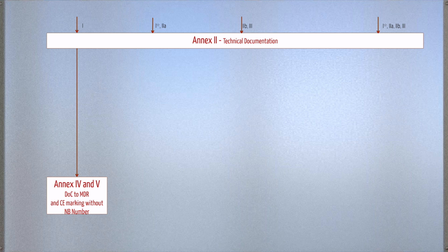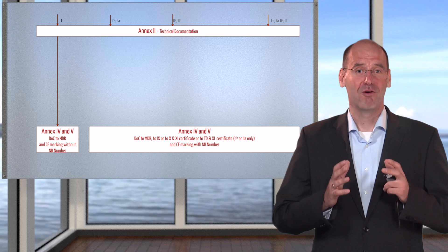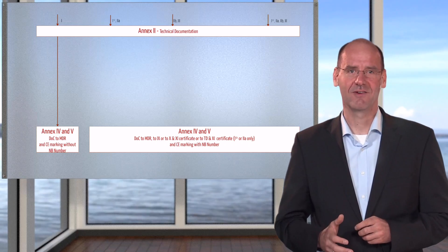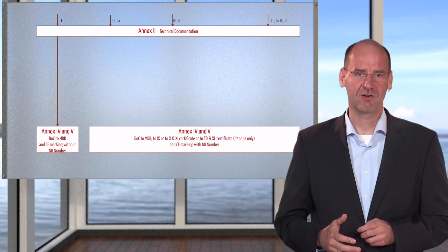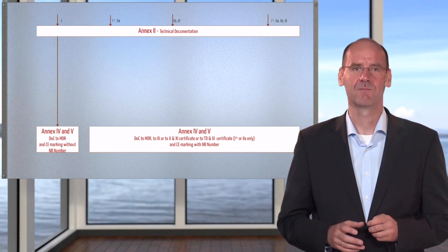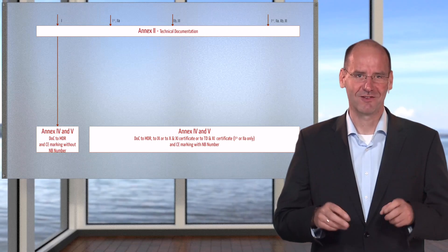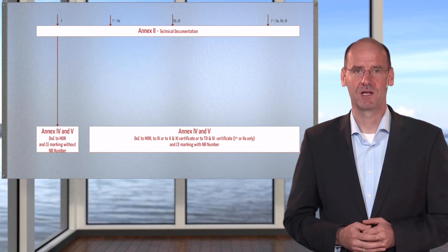Before marketing class 1 devices — these are the most uncritical ones — manufacturers just have to declare the conformity, and Annex 4, respectively Annex 5, describes how to. But this is no major deal. For all other classes, it is a major deal. Already for a class 1 device with a measuring function or that is sterile — these devices are marked here as class 1 star — a notified body must be involved.